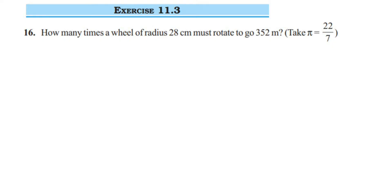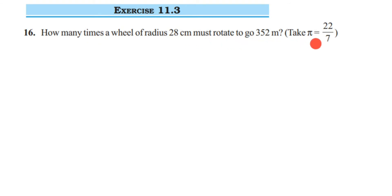Here I am doing exercise 11.3, 16th question from the Perimeter and Area chapter of class 7. The question is: how many times must a wheel of radius 28 centimeters rotate to go 352 meters? Take pi as 22 upon 7.